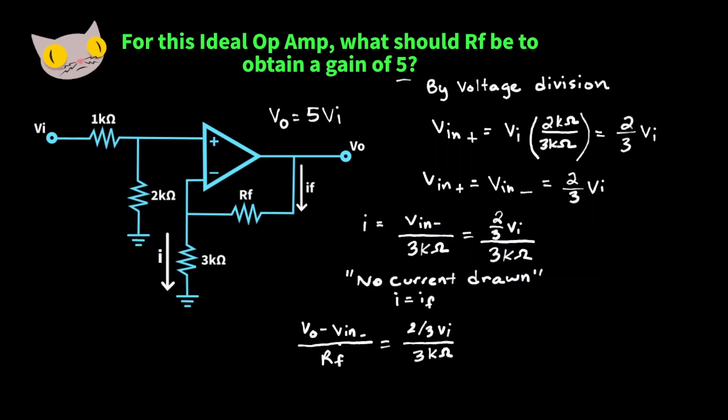And let's replace VIN negative with its value two-thirds VI. So now that gives us 5 VI minus two-thirds times VI over RF is equal to two-thirds VI over 3,000 ohms.